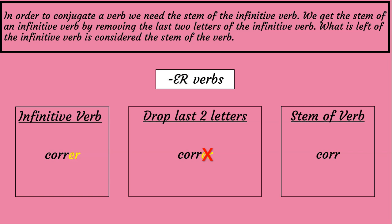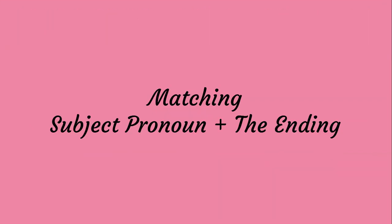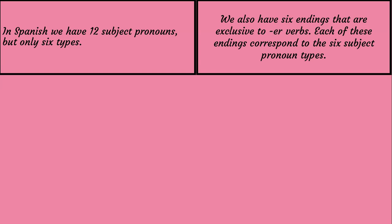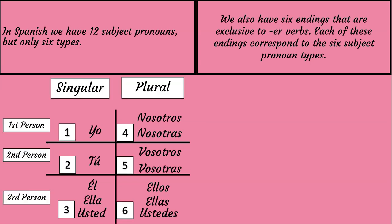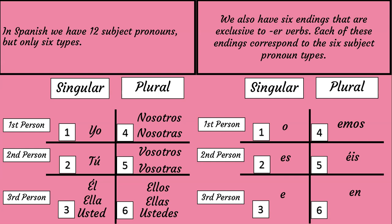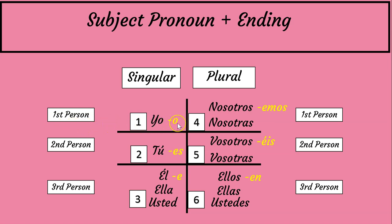And what's left is considered the stem of the infinitive verb. Now we're going to see how we can match the subject pronoun with the correct ending. In Spanish, we have twelve subject pronouns, but only six types. We also have six endings that are exclusive to ER verbs. Each of these endings correspond to the six subject pronoun types. For example, the first person singular YO goes with O. The second person singular TÚ goes with ES. The third person singular ÉL, ELLA, USTED goes with E. The first person plural NOSOTROS, NOSOTRAS goes with EMOS. The second person plural VOSOTROS, VOSOTRAS goes with EIS. The third person plural ELLOS, ELLAS, USTEDES goes with EN.